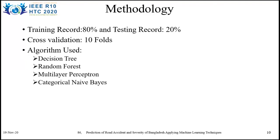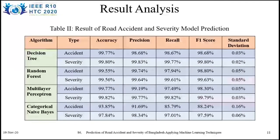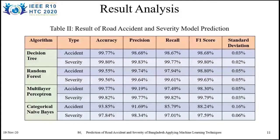Here we can see the results of different algorithms. We measured accuracy, precision, F1 score, and standard deviation for each algorithm separately, for both accident and severity prediction. The results showed how these variables varied across different algorithms. From the table, the accuracy of decision tree and multilayer perceptron is almost equal and higher than the other two. However, the F1 score of decision tree is greater than multilayer perceptron, and the runtime of decision tree is much faster compared to multilayer perceptron. So the best result came from the decision tree.